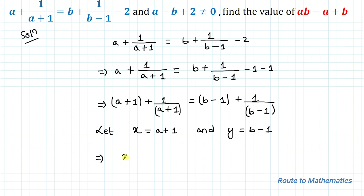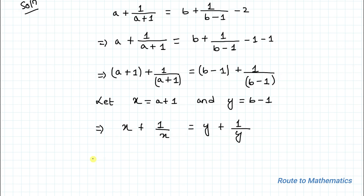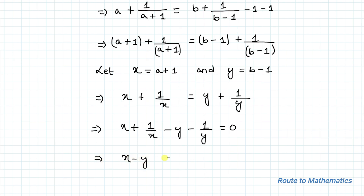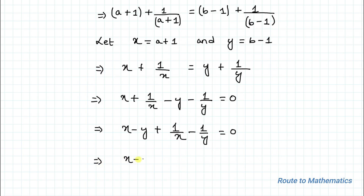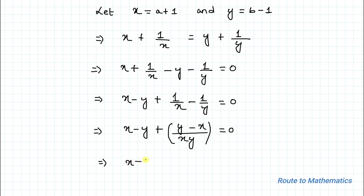So our equation becomes x + 1/x = y + 1/y. In the next step I will take all the terms to the left hand side. So what I am getting is x − y + 1/x − 1/y = 0. Taking LCM, we get x − y + (y − x)/(xy) = 0. We can write y − x as −(x − y) divided by xy, taking minus 1 common.